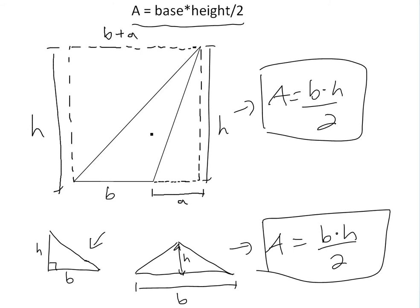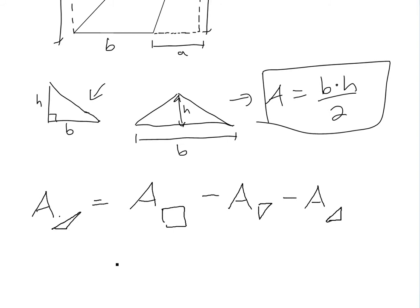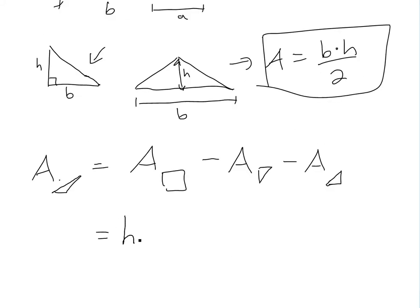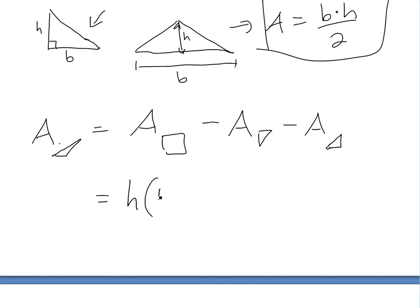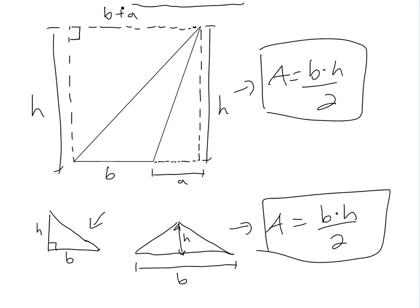What we're going to do now is get the area of the rectangle subtracted by these two areas, and this should equal the triangle's area. To get the area of this triangle, we have: area of the triangle equals area of the rectangle minus area of the top right-angle triangle minus area of the bottom right-angle triangle. The area of the rectangle is h times (b plus a). Now we subtract the area of this right-angle triangle, which is base times height divided by two, so that's h times (b plus a) over two.